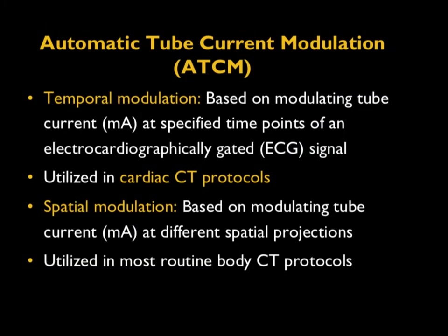Temporal dose modulation works by modulating tube current at specified time points of an ECG signal. This method is utilized in cardiac CT protocols. Spatial dose modulation is used in most body CT protocols; when someone mentions tube current modulation, they almost always imply spatial dose modulation. Only in cardiac CT protocols do we use temporal dose modulation.